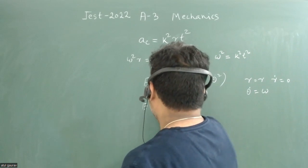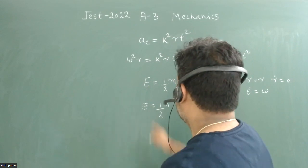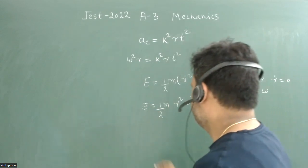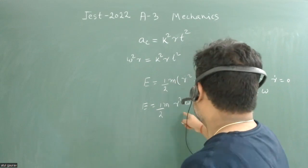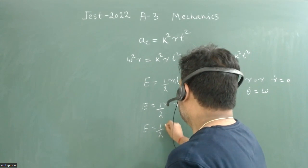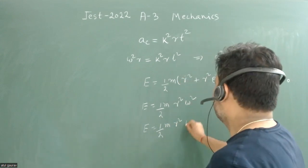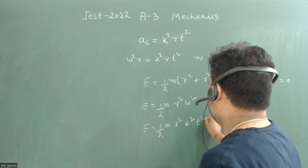Our energy is ½mr²ω². From here we can write the value of energy as a function of time. We can put E = ½mr² and ω² is k²t².